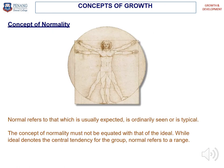Now we move to concepts of growth. First, the concept of normality. Normal refers to something that is typical, usually expected, and ordinarily seen. The concept of normality must not be equated with that of the ideal. While ideal denotes the central tendency for the group, normal refers to a range. Do not confuse normal with ideal — normal is something typical, but ideal is something better than normal.